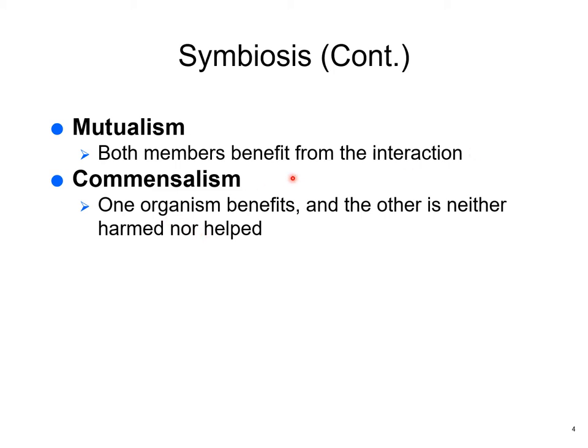Commensalism is when one organism benefits and the other is neither helped nor harmed. An example: schools of tiny fish swimming beside sharks — they stay out of the shark's range of vision. When the shark eats, they grab tiny bits of food he spills. The shark doesn't even know they're there, and other predators won't attack fish the shark is accidentally protecting. Only the little fish benefit.